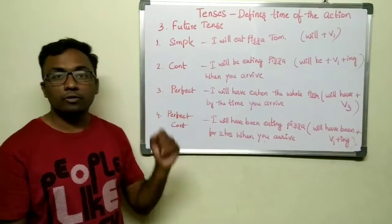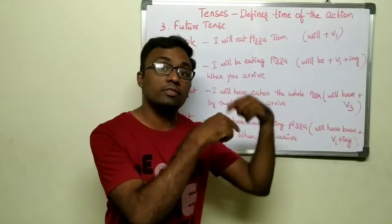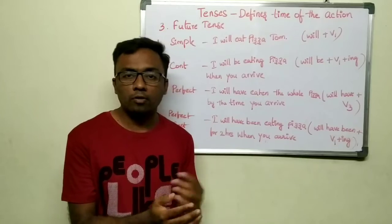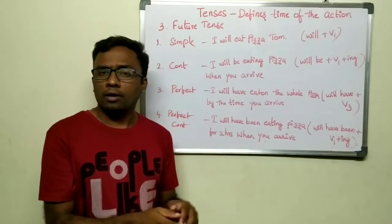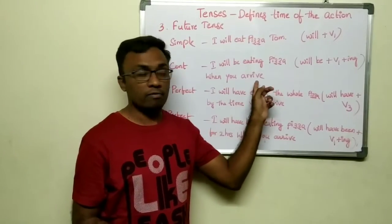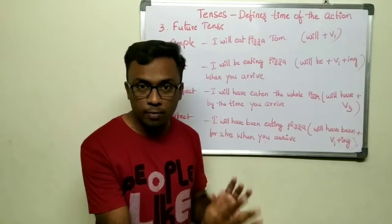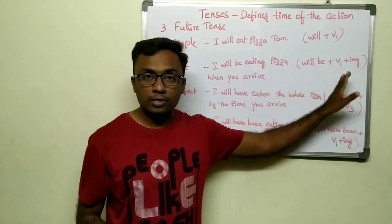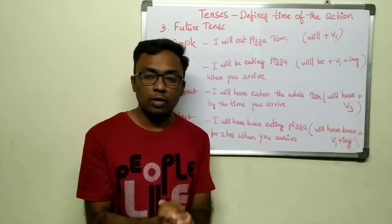Future continuous tense is about an action you will be doing continuously in the future — 'I will be eating pizza when you arrive.' For example, if a friend says they are coming at 10:30, you might say you will already be eating breakfast by then. The structure is will be + V1 + ING. As established, whatever the tense — past, present, or future — continuous always means V1 plus ING.